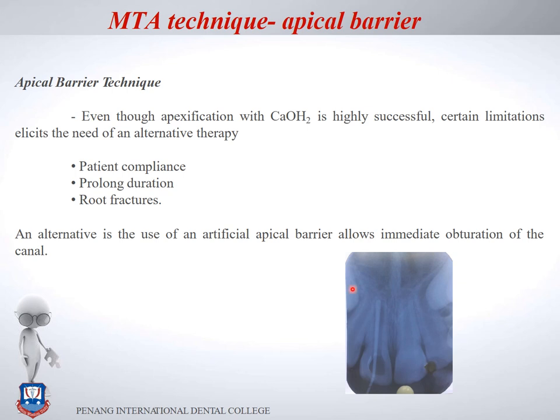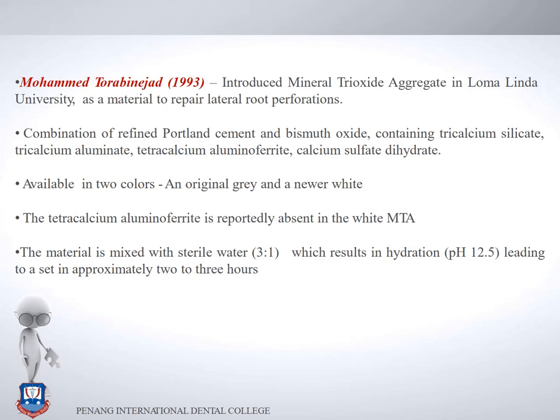Calcium hydroxide apexification required very long treatment time, making follow-up difficult. Patients would often fail to return, and the long duration combined with thin root canals made the teeth prone to fracture. Calcium hydroxide also made the remaining root structure fragile. To overcome this, an artificial apical barrier allowing immediate obturation was introduced — the MTA technique. MTA was originally introduced in 1993 for repair of root canal perforations and was later applied to apexification.